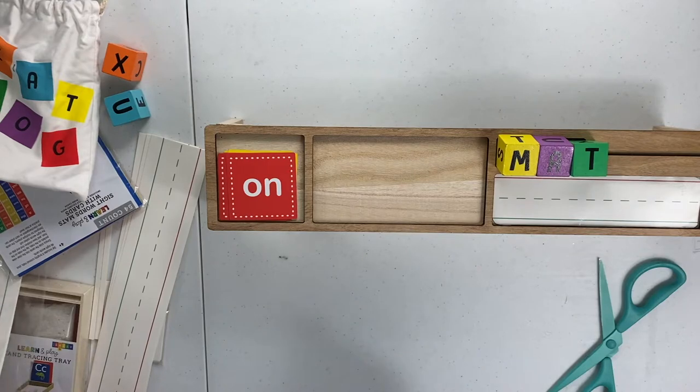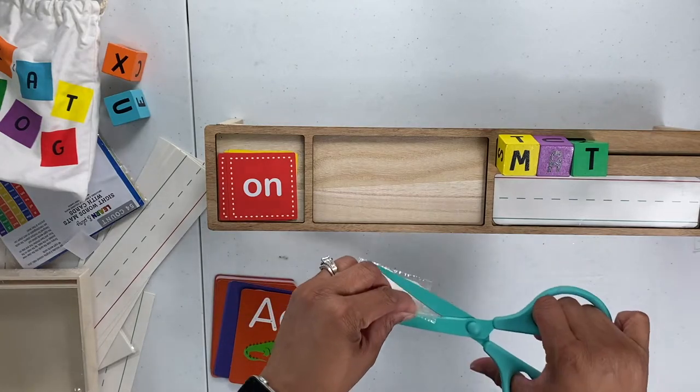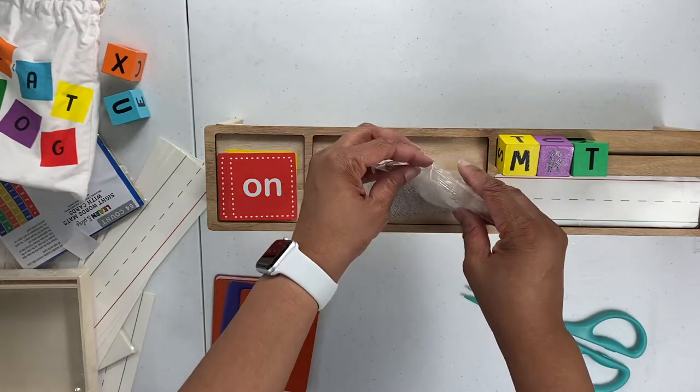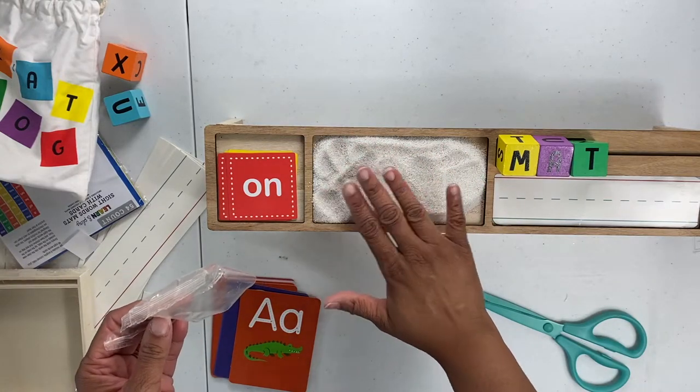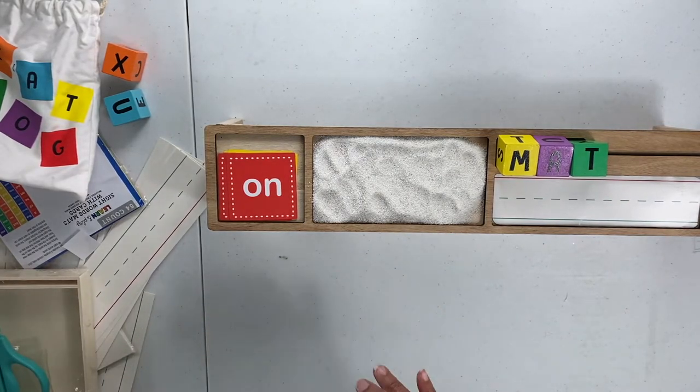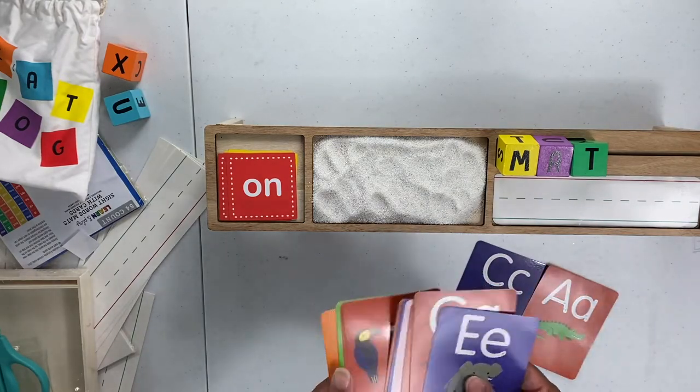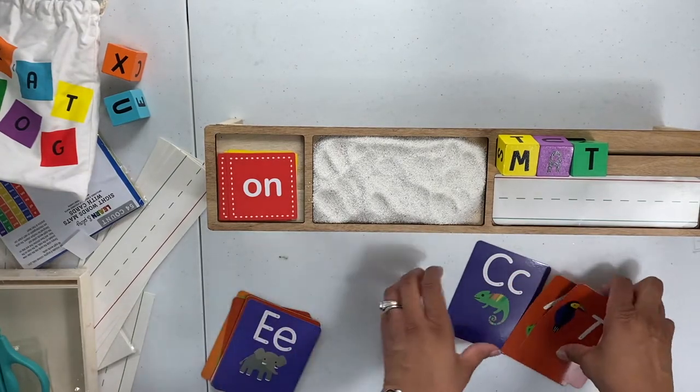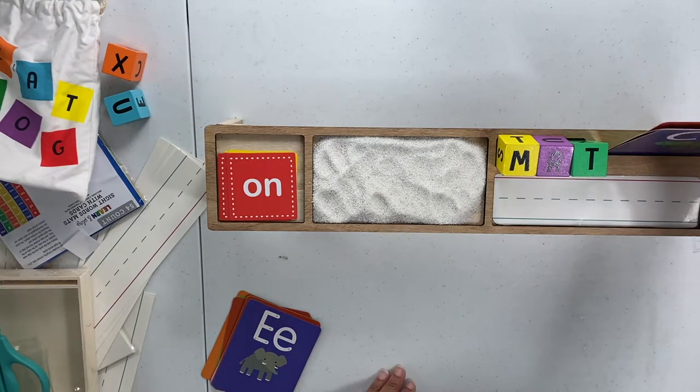And then finally, we're going to use our sand tray. And then we have the letters here. So if you want to do C, A, T, or whatever words we're working on, you can go ahead and place those in that little spot right there.